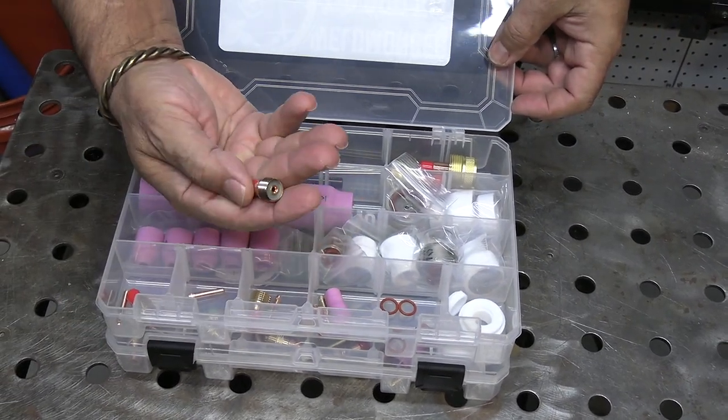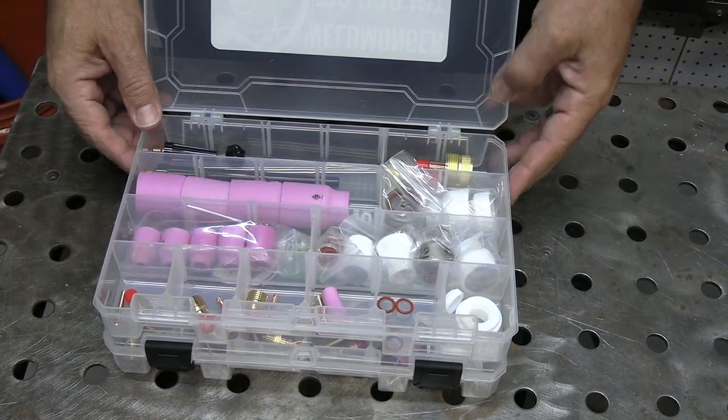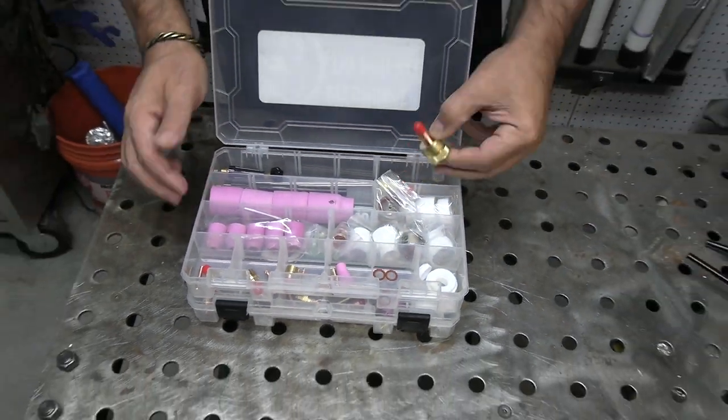This 9 and 20 style kit just uses the smaller hardware but pretty much uses all the same cups with the same capabilities as the one for 17-18-26.